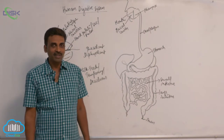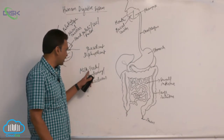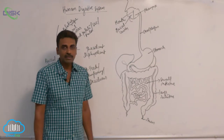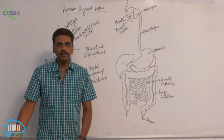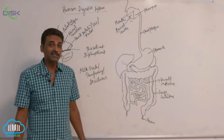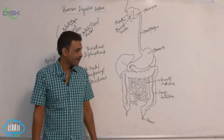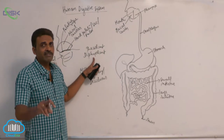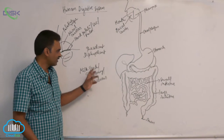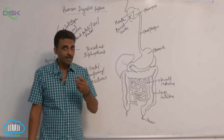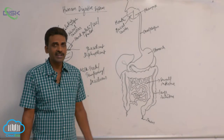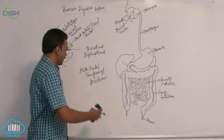The first set of teeth are small and weak. They are called milk teeth, temporary teeth, or deciduous teeth. They are not permanent. Between six and twelve years of age, they are replaced by another set of teeth called permanent teeth. Since we find two sets of teeth during a lifetime, we call it diphyodont dentition.